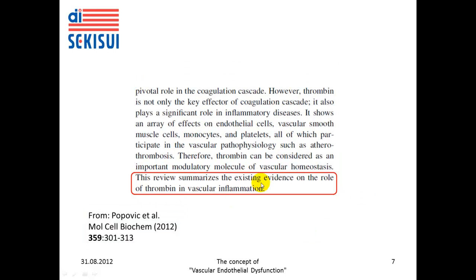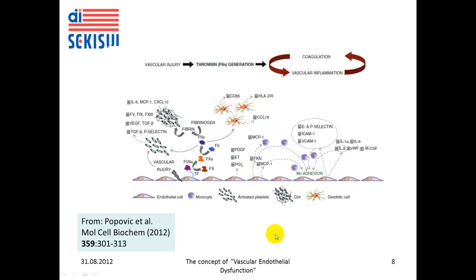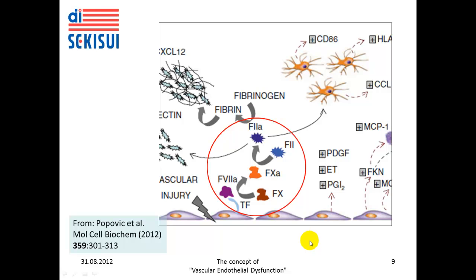This review summarizes the existing evidence on the role of thrombin in vascular inflammation and the clinical consequences of this situation. This picture is taken from the publication by Popovich and colleagues, which depicts the central role of thrombin generation in vascular dysfunction. Here is an enlarged view of this figure.